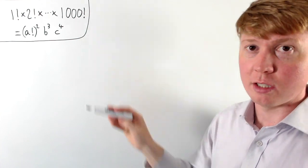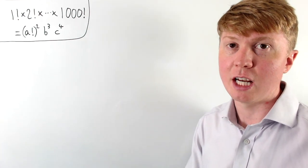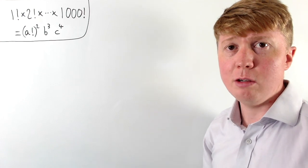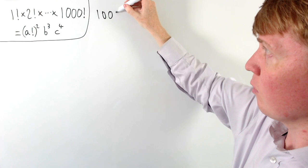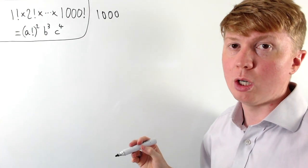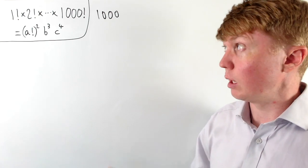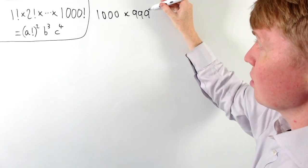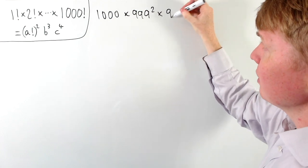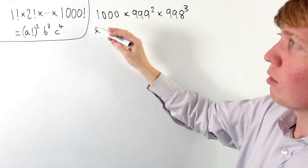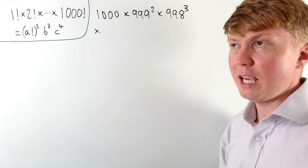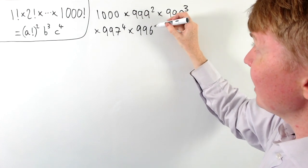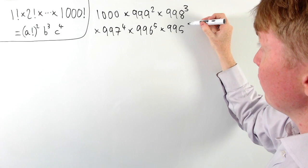1000 factorial is 1000 times 999 times 998, all the way down to 2 times 1. So in all of these factorials multiplied together, the number 1000 appears only once — in 1000 factorial — giving 1000 to the power of 1. Then 999 appears twice: in 1000 factorial and in 999 factorial. So we write this as 1000 times 999 squared. Then 998 appears 3 times, giving 998 cubed. A nice pattern emerges: 997 to the power of 4, 996 to the power of 5, 995 to the power of 6.